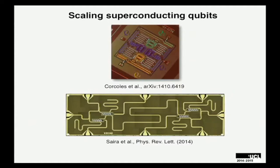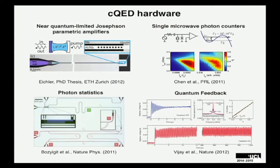Here are some examples of circuit QED circuits from IBM and Delft: four superconducting qubit devices where each qubit has a cavity for readout and the qubits are coupled via a bus. It's also worth highlighting that a number of hardware tools and techniques have been developed around the circuit QED architecture. This includes near-quantum-limit amplifiers, the Josephson parametric amplifiers, and microwave photon counters, which enable photon statistics experiments. Additionally, you can do weak measurement experiments and feedback to generate a system through coherent oscillation.